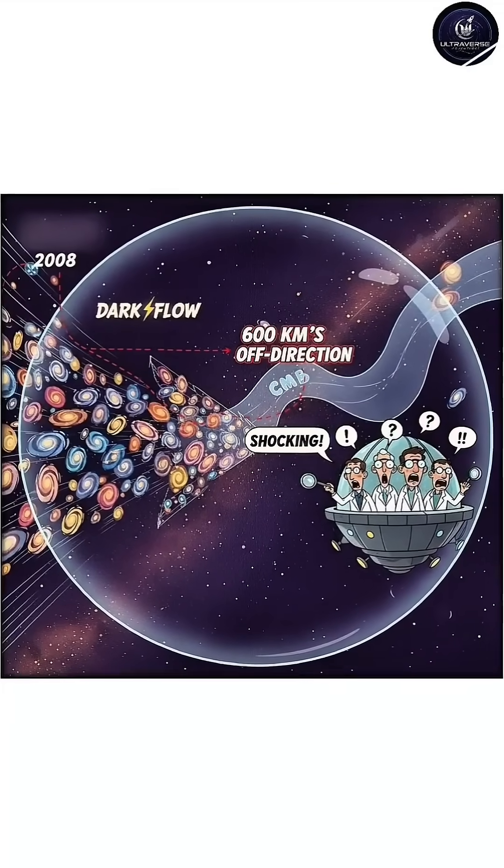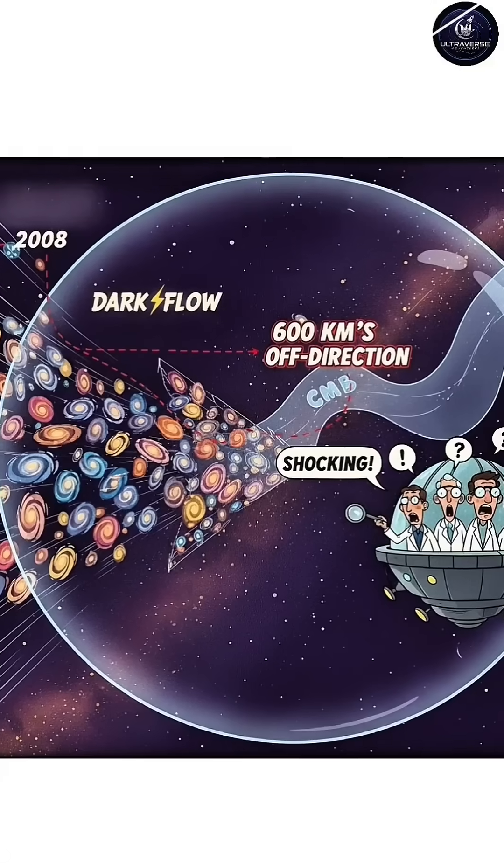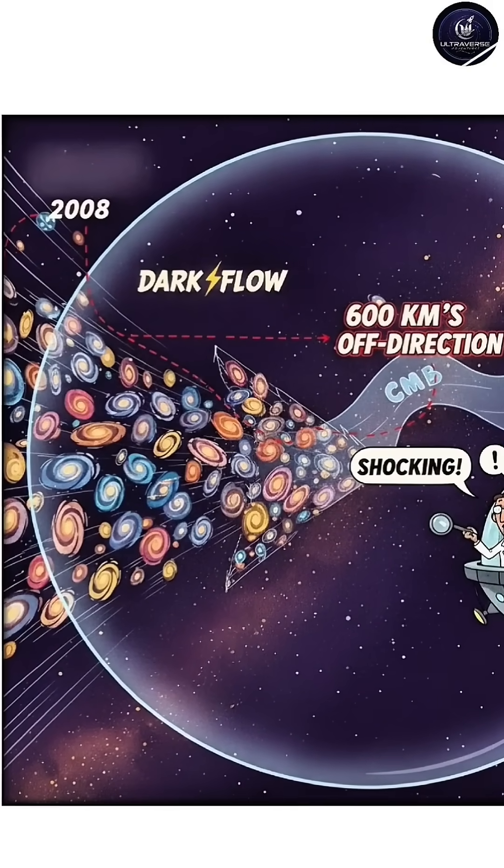Normally, galaxies scatter randomly as the universe expands. But the galaxies in dark flow seem to be pulled toward an unknown point.